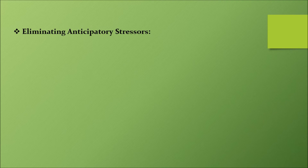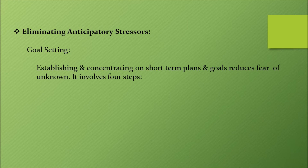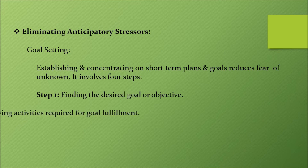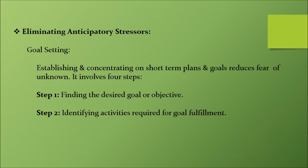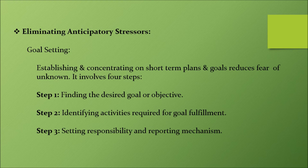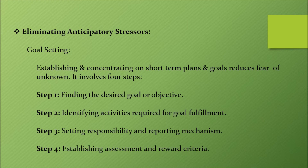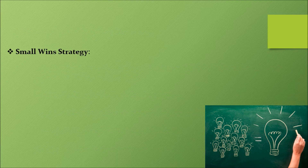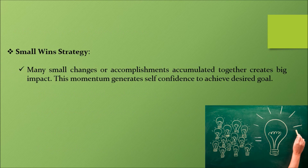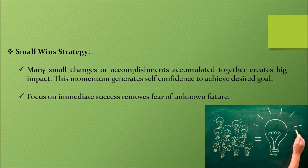Eliminating anticipatory stressors through goal setting. Establishing and concentrating on short-term plans and goals reduces fear of the unknown. It involves four steps: Step 1 — finding the desired goal or objective; Step 2 — identifying activities required for goal fulfillment; Step 3 — setting responsibility and reporting mechanism; Step 4 — establishing assessment and reward criteria. Small win strategy: many small changes or accomplishments accumulated together create a big impact. This momentum generates self-confidence to achieve the desired goal, and focus on immediate success removes fear of the unknown future.